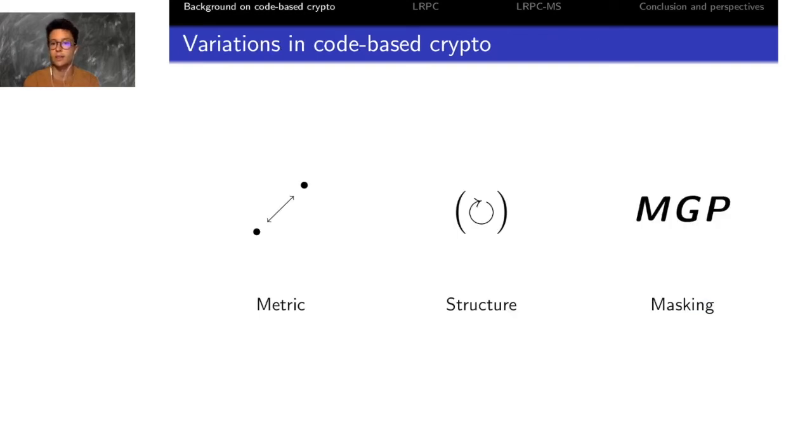There are several variations possible in the design of code-based cryptosystems, which give different flavors and different notions of performance and security. We've already seen that we can change the metric between the Hamming metric or the rank metric or another metric, and we will see that we can also have the possibility to add structure to the objects and to design cryptosystems with or without masking.